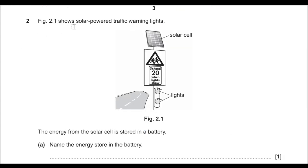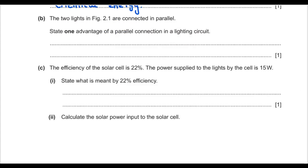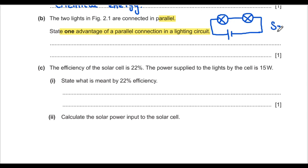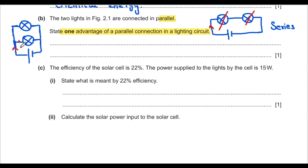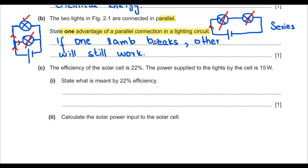Question 2: figure 2.1 shows solar-powered traffic warning lights. The energy from the solar cell is stored in the battery. Name the energy stored in the battery — batteries always store chemical energy. Part b: the two lights are connected in parallel. One advantage is that if one lamp breaks, the other will still work in a parallel combination.